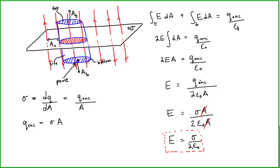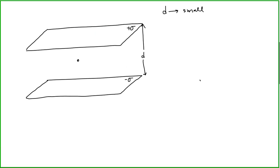Let's apply this to both plates. We've shown that for a single large plane of charge, the electric field has a magnitude equal to the surface charge density over 2 epsilon naught. So for the point we are interested in, the electric field due to the upper plate is pointing straight down, with a value of sigma over 2 epsilon naught.